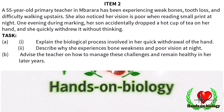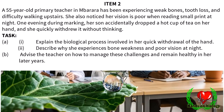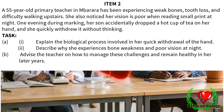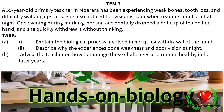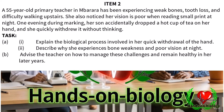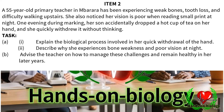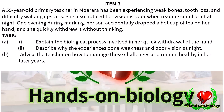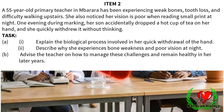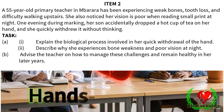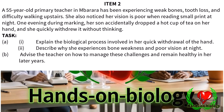Task A Part 1: Explain the biological process involved in her quick withdrawal of the hand. Part 2: Describe why she experiences bone weakness and poor vision at night.